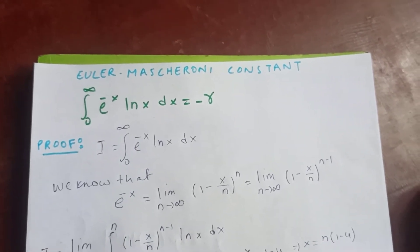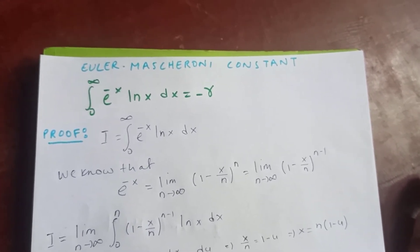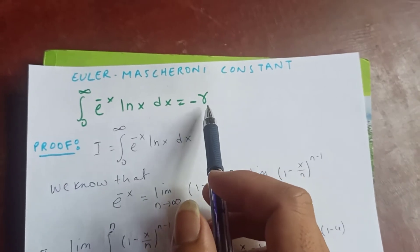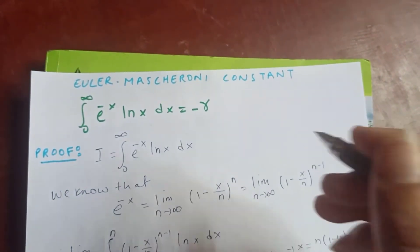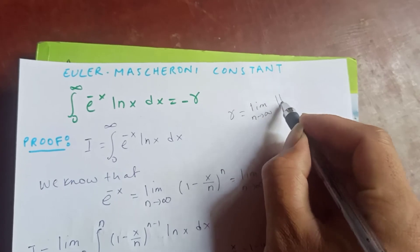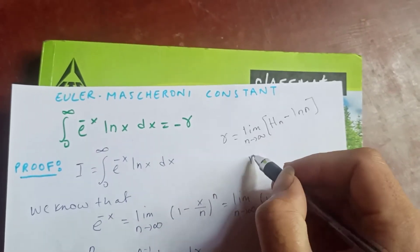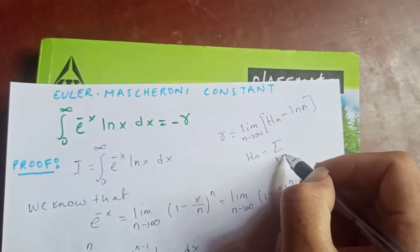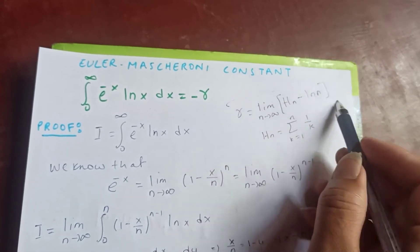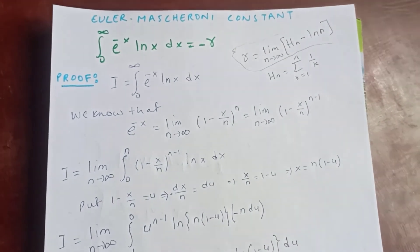Thanks for watching. Today we'll calculate the integral representation for the Euler-Mascheroni constant. The claim is that the integral from 0 to infinity of e^(-x) log(x) dx equals negative gamma, our Euler-Mascheroni constant. Recall that the Euler-Mascheroni constant is defined as the limit as n → ∞ of the harmonic number H_n minus the natural logarithm of n, where H_n is the harmonic series sum from k=1 to n of 1/k.